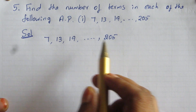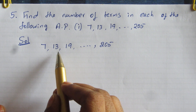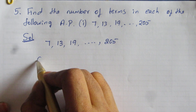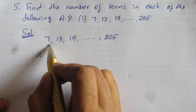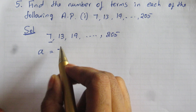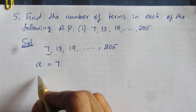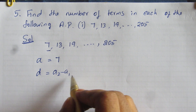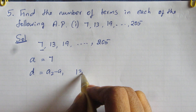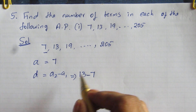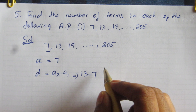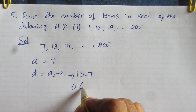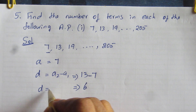So, given this AP: 7, 13, 19, ..., 205. The first term A is equal to 7. Common difference D equal to A2 minus A1, that is 13 minus 7, so common difference D equal to 6.